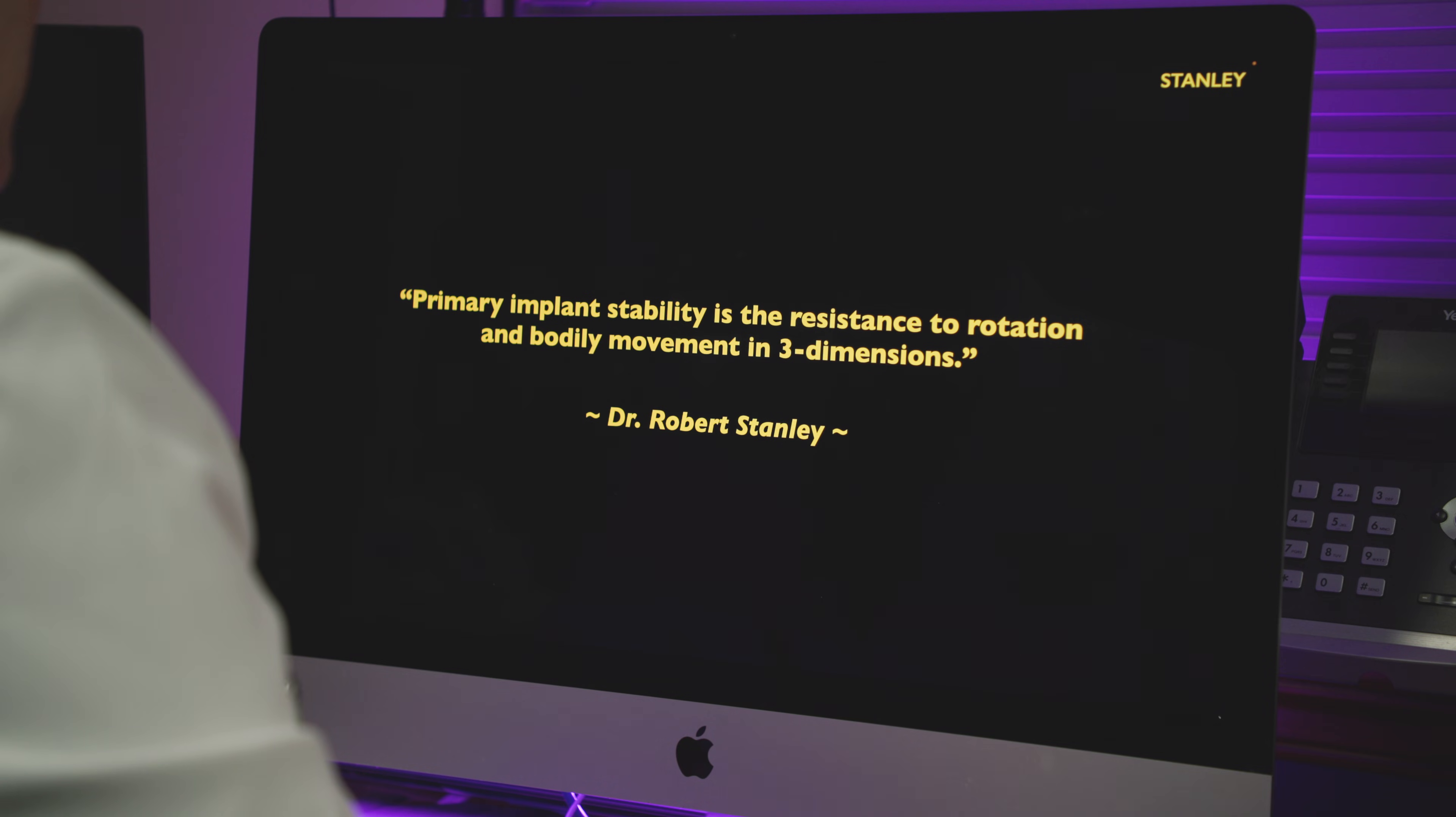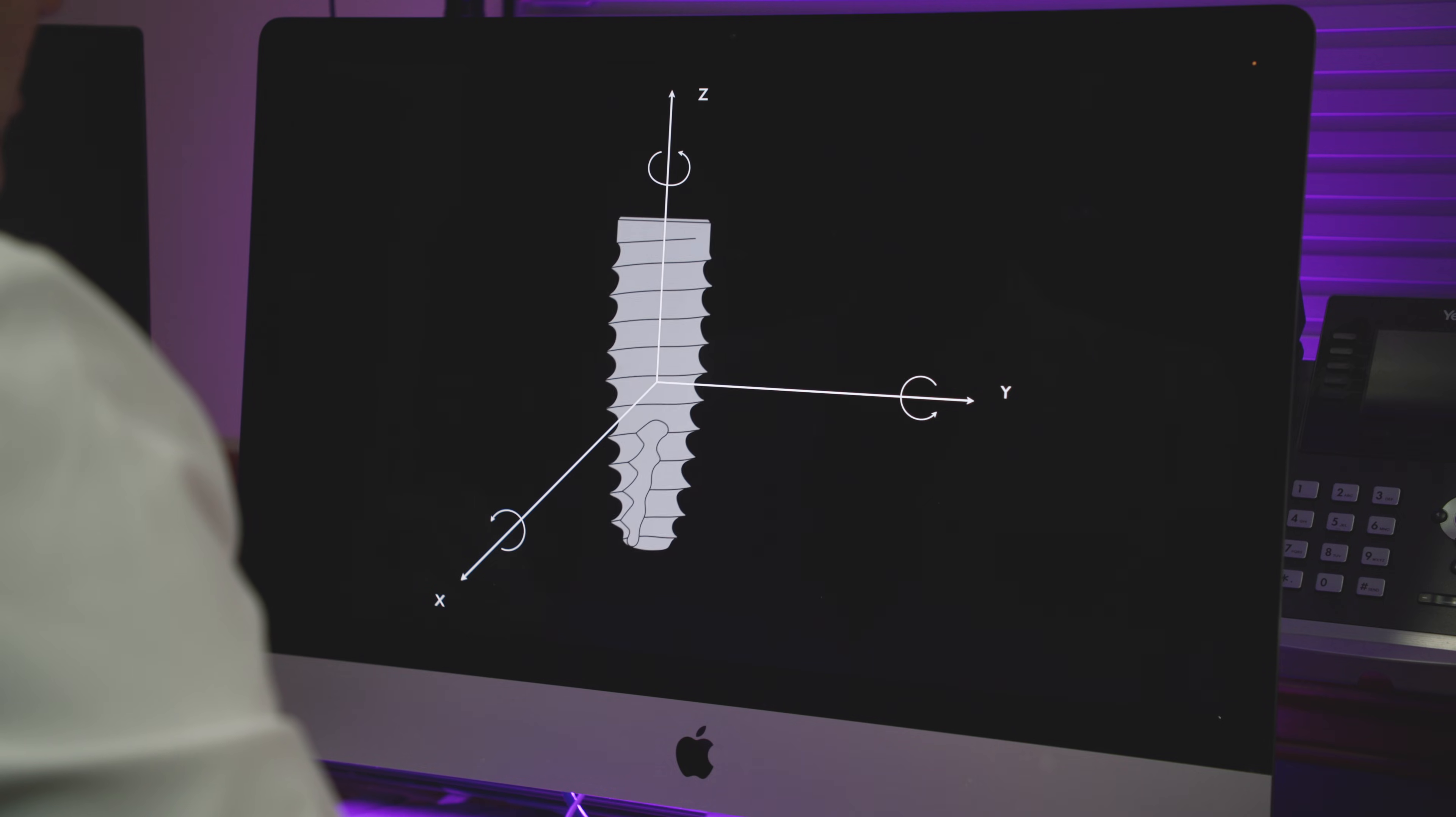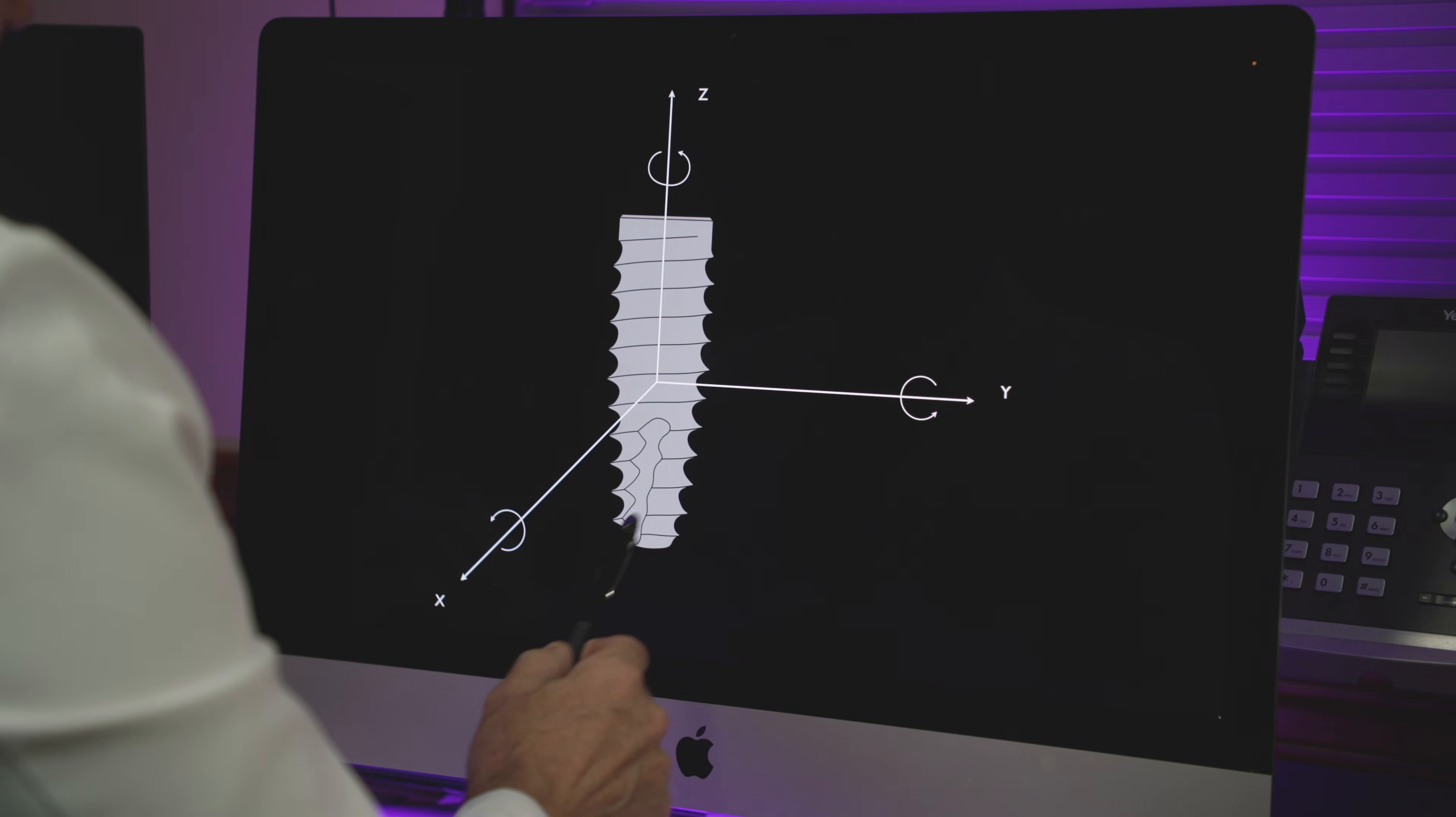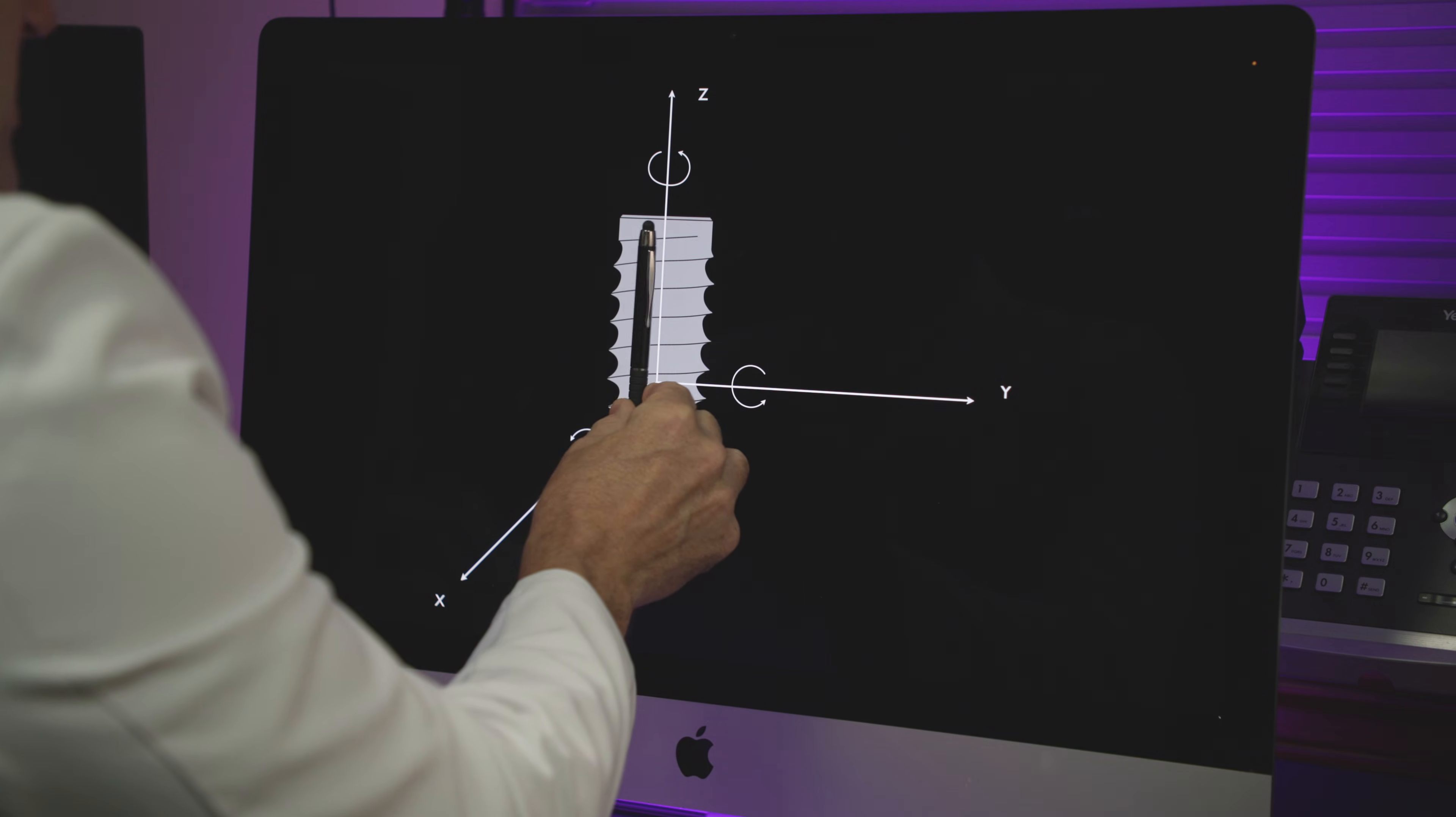I'm defining primary implant stability as the resistance to rotation and bodily movements in three dimensions. If you look at this implant right here and you can't move it along the Y axis, you can't move it along the X axis, and if you can't move it along the Z axis, then that would be the resistance to movement along these three axes. Now each one of these axes has a rotational component to it. So the implant itself could rotate about the X, it could rotate about the Y, and it can rotate about the Z.